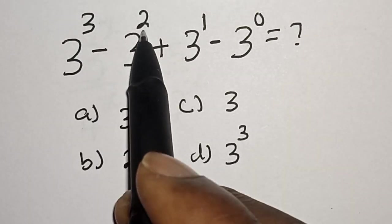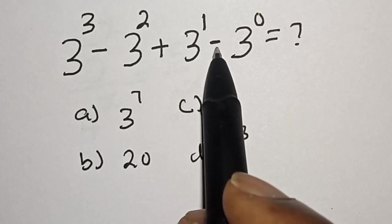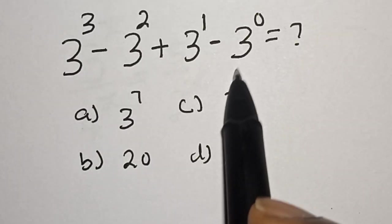3 raised to power 3 minus 3 raised to power 2 plus 3 raised to power 1 minus 3 raised to power 0 is equal to what?